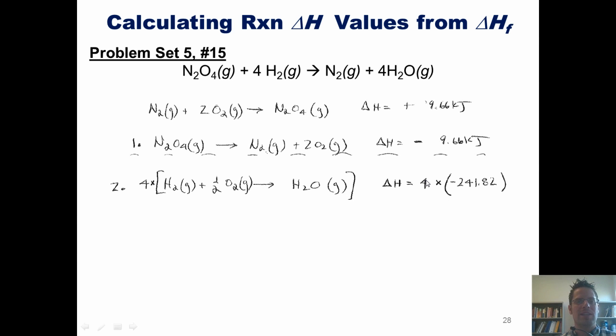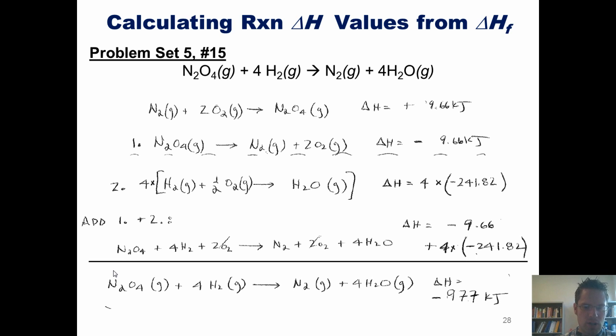Now I add up equations 1 and 2, which gives this overall equation: N2O4 plus 4H2 plus 2O2 gives N2 plus 2O2 plus 4H2O. The overall enthalpy values for these two equations are also added up, and I end up getting the final target equation I wanted and a final enthalpy value for this whole reaction of negative 977 kilojoules.